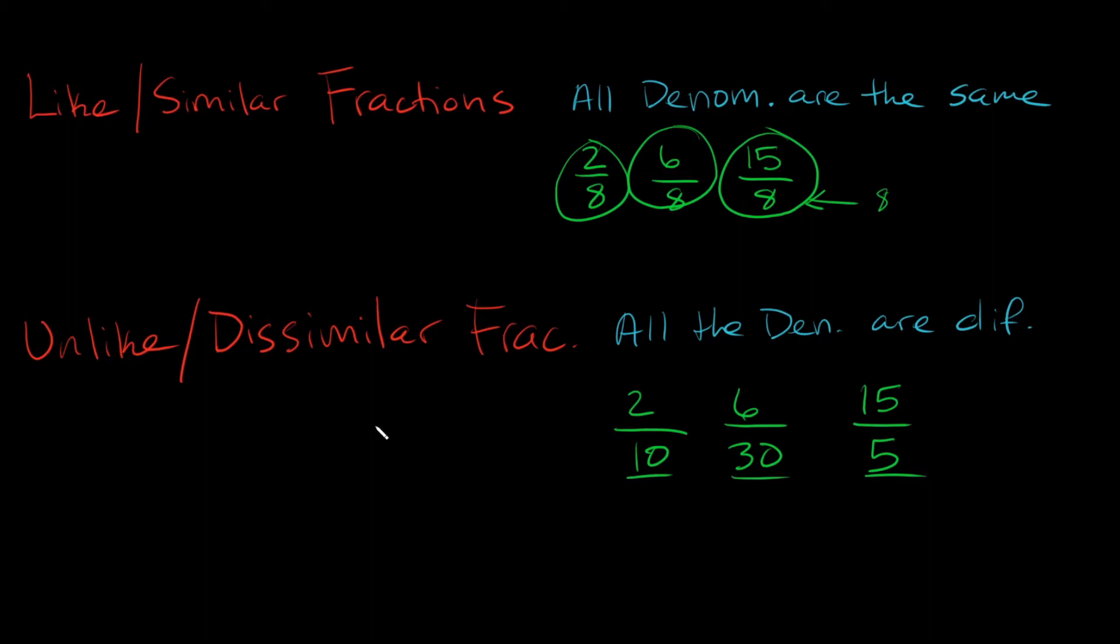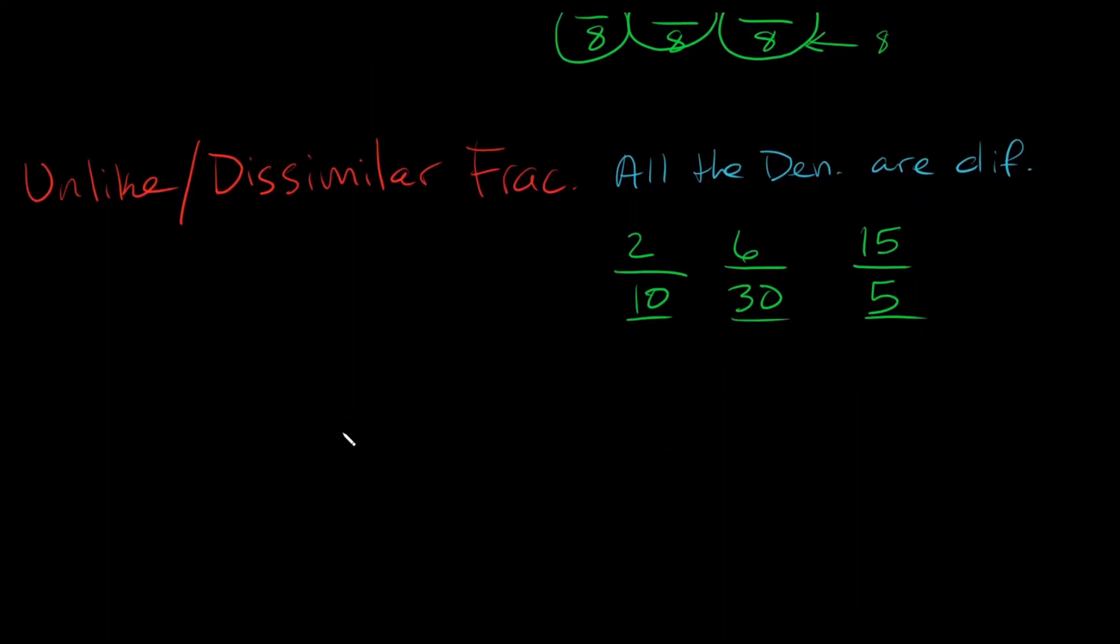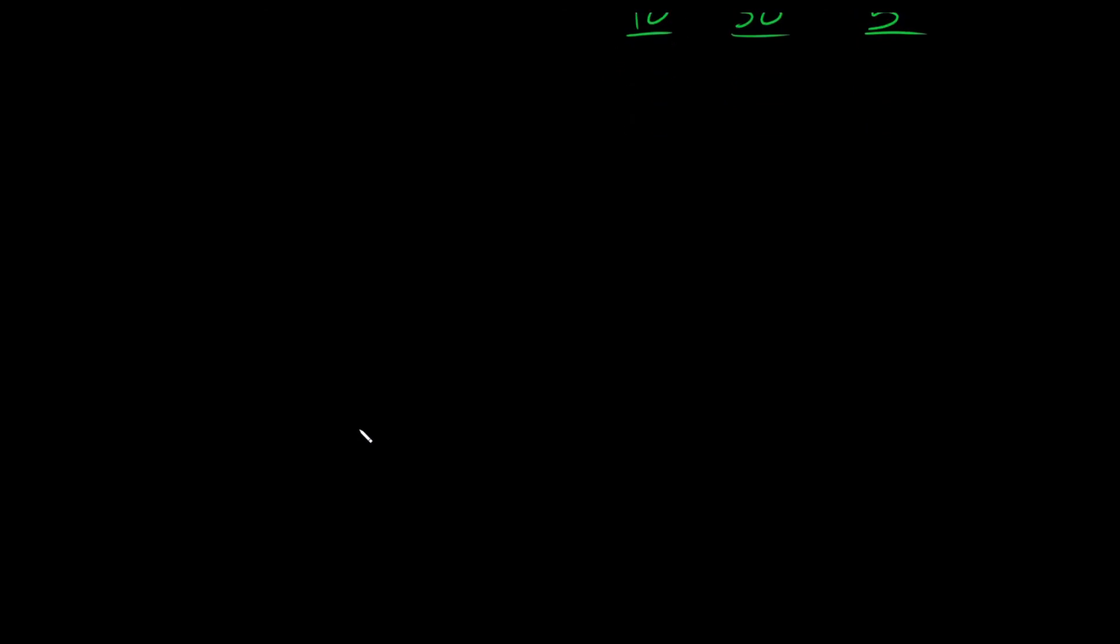So now I just want to visually show you what the difference is between proper, improper, and mixed numbers, because I think that's going to be really helpful. Let's say this is a pizza this time. And let's say I cut it into fourths. So four equal slices. Now let's say I ate 9 fourths, or 9 over 4, slices of pizza. How much pizza did I eat? So I cut this thing into four total equal pieces. So 1, 2, 3, 4.